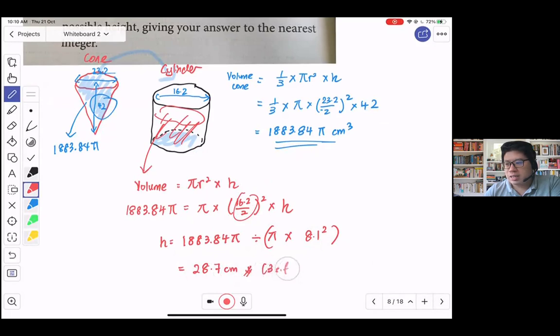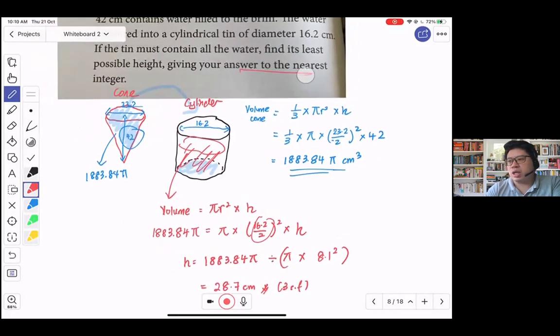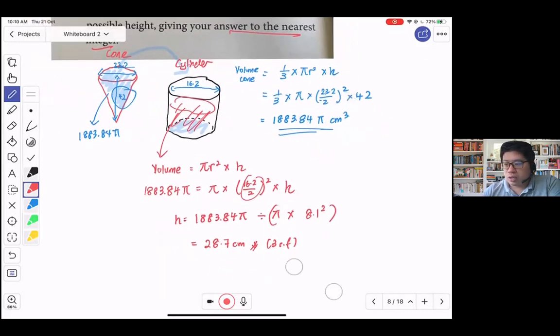Now since the question has asked us to leave the answer to the nearest integer, I'm going to choose it as 29 cm, minimally 29 cm for me to contain all the water coming from the cone. So that's all for this question, thank you very much.